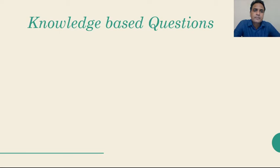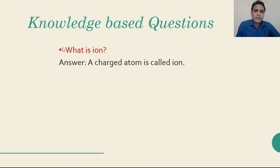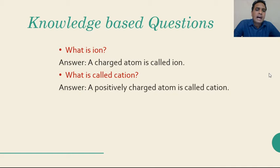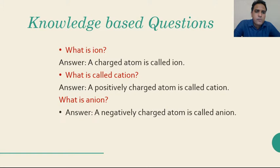First, knowledge based questions. What is Ion? A charged atom is called Ion. Next, what is called Cation? A positively charged atom is called Cation. Now, what is Anion? A negatively charged atom is called Anion.